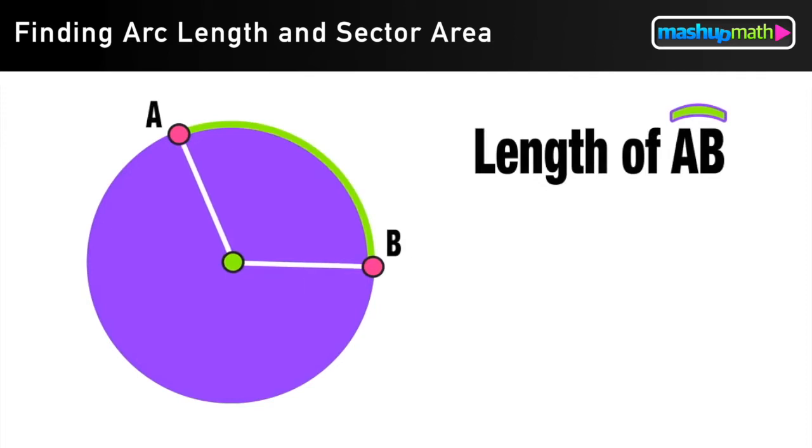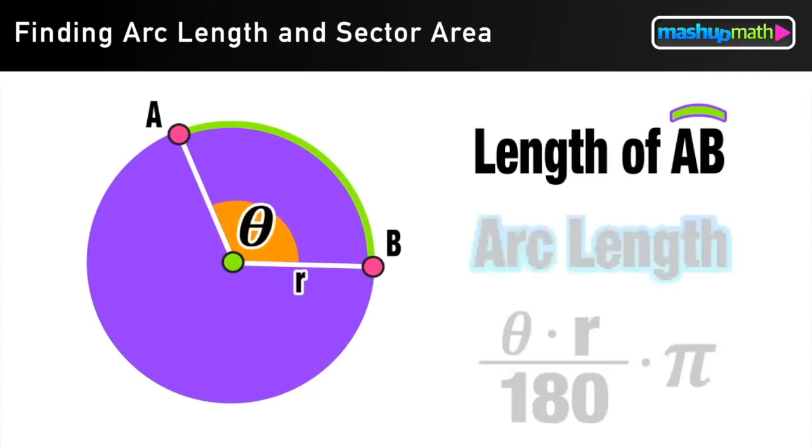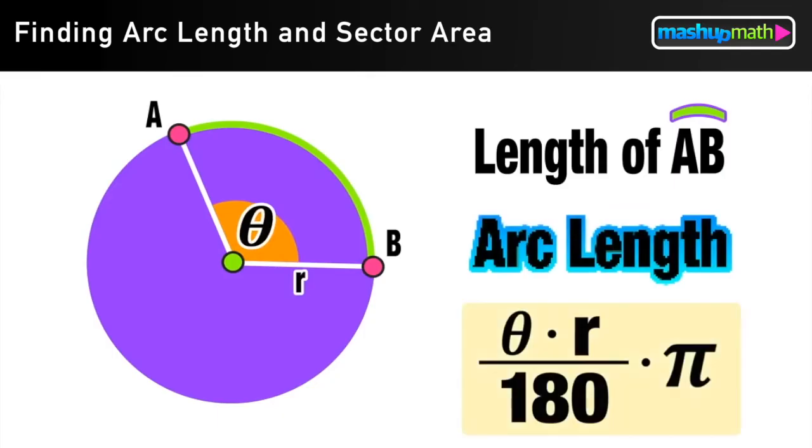Now if we know the length of the radius of the circle, and we also know the measure of the angle that intercepts the arc, in this case arc AB, we can use what's called the arc length formula to find the length of that arc AB.